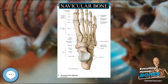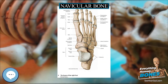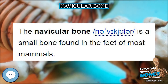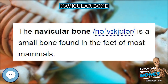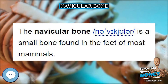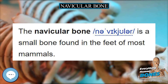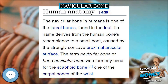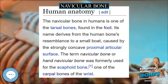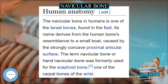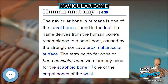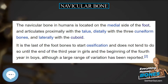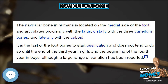The navicular bone in the horse is supported by the distal sesamoidean impar ligament and two collateral sesamoidean ligaments. The navicular bursa is located between the flexor surface of the navicular bone and the deep digital flexor tendon, which runs between the bursa and the distal phalanx.